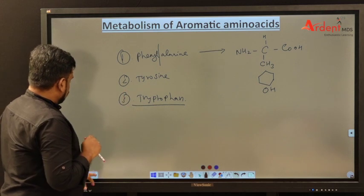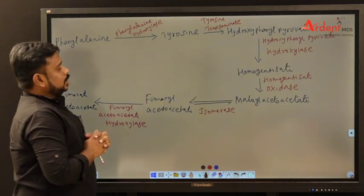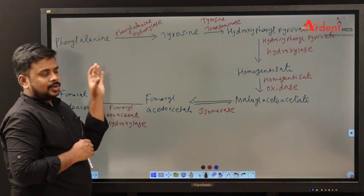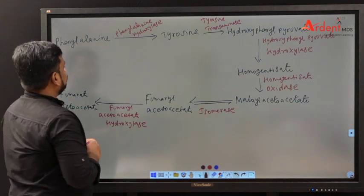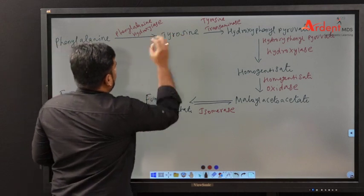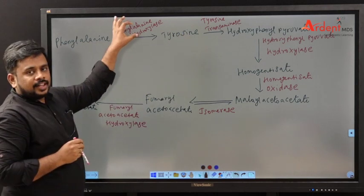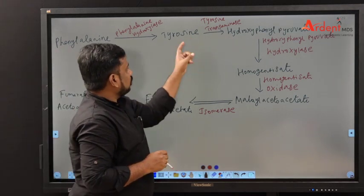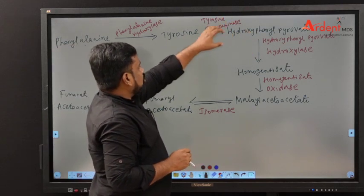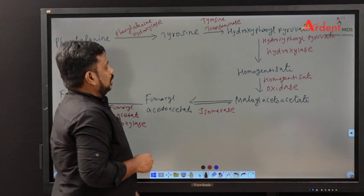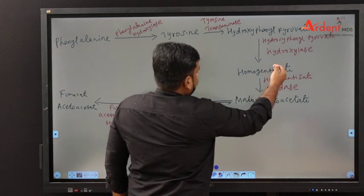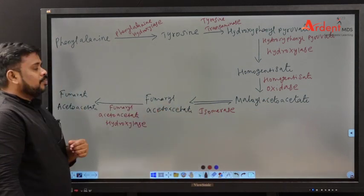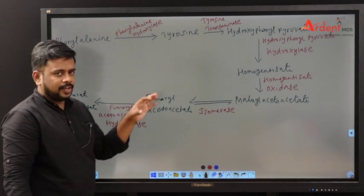Now we go through the metabolism of aromatic amino acids. Phenylalanine is converted into tyrosine by the enzyme phenylalanine hydroxylase. Tyrosine is then converted into hydroxyphenylpyruvate by tyrosine transaminase. Later it is converted into homogentisate, then maleylacetoacetate, and finally fumarylacetoacetate, by the help of various enzymes.